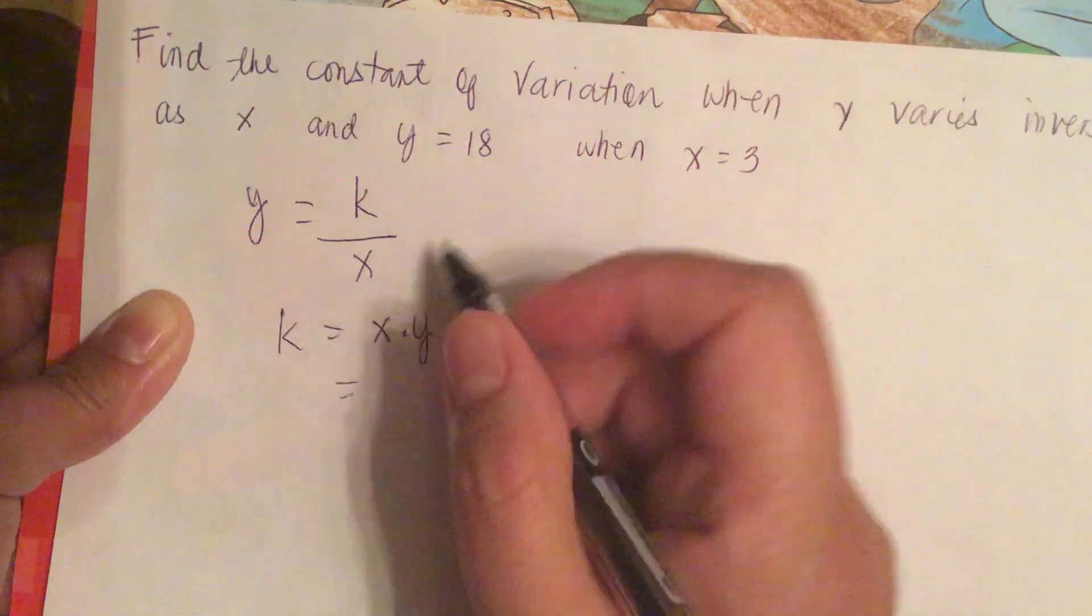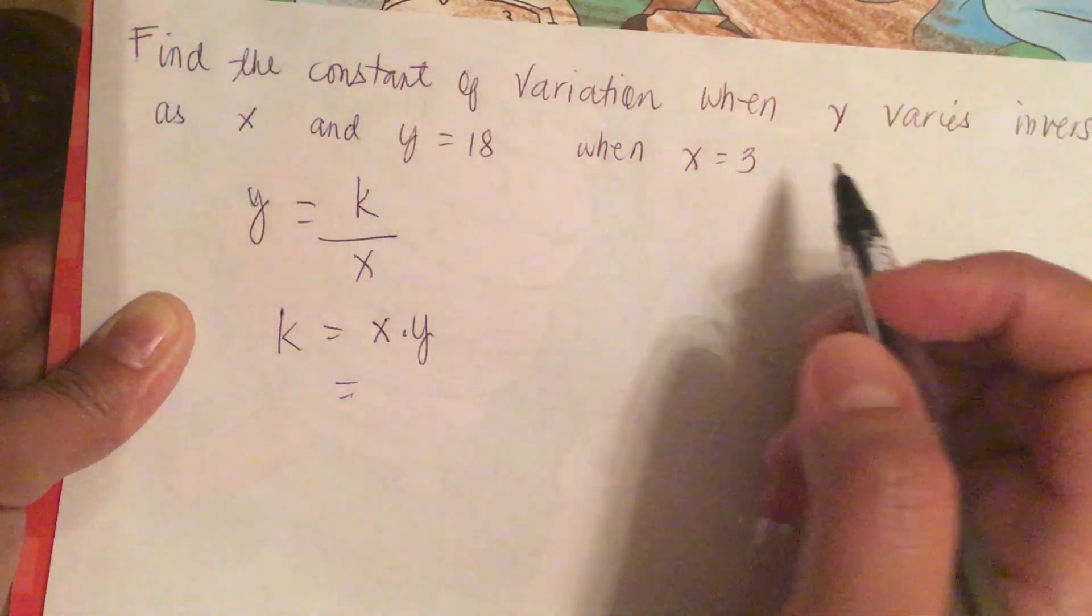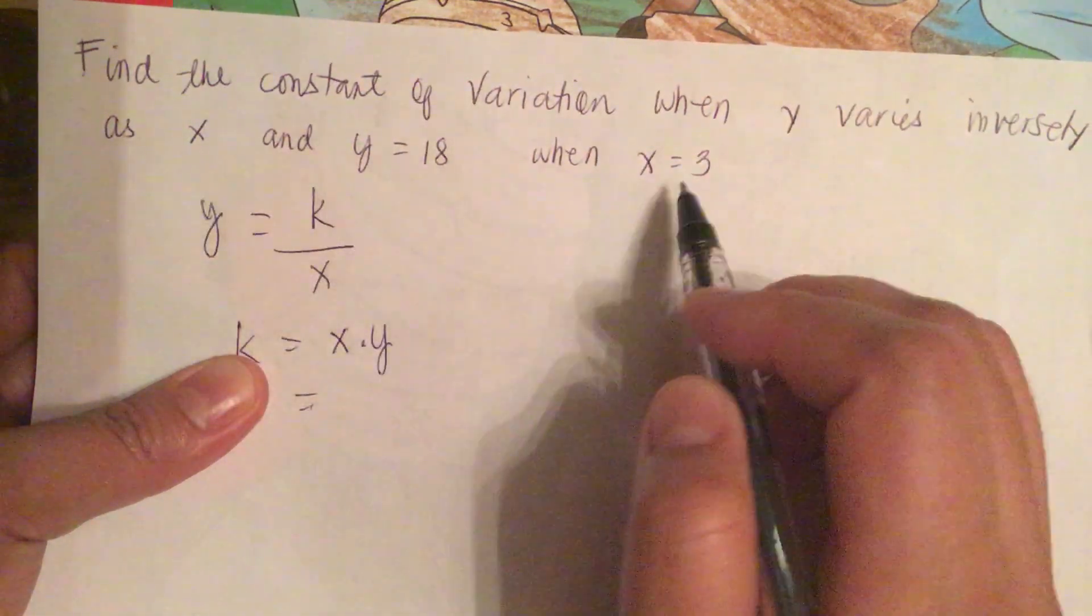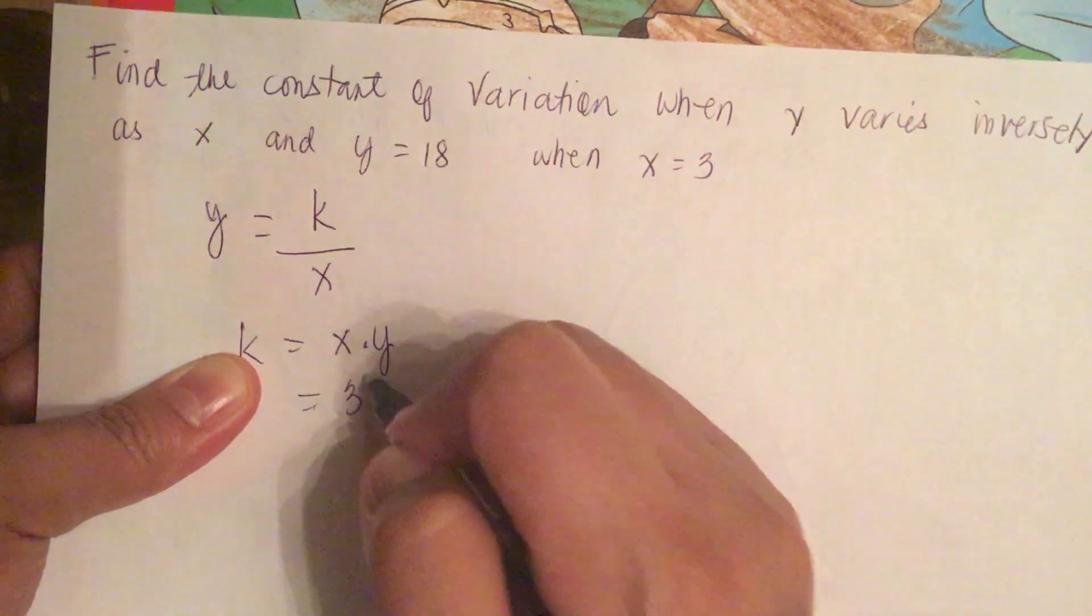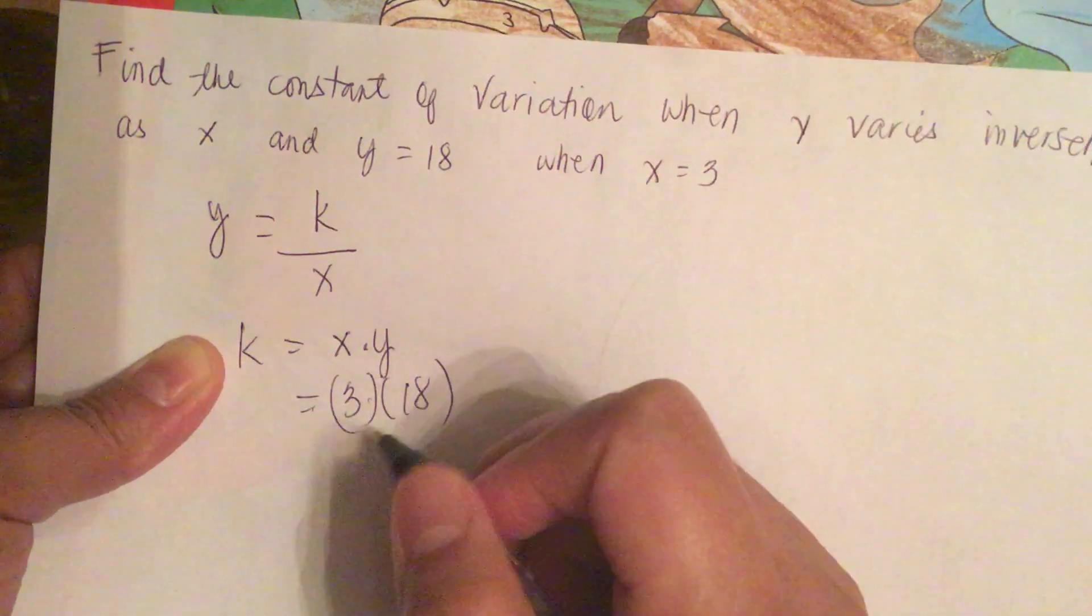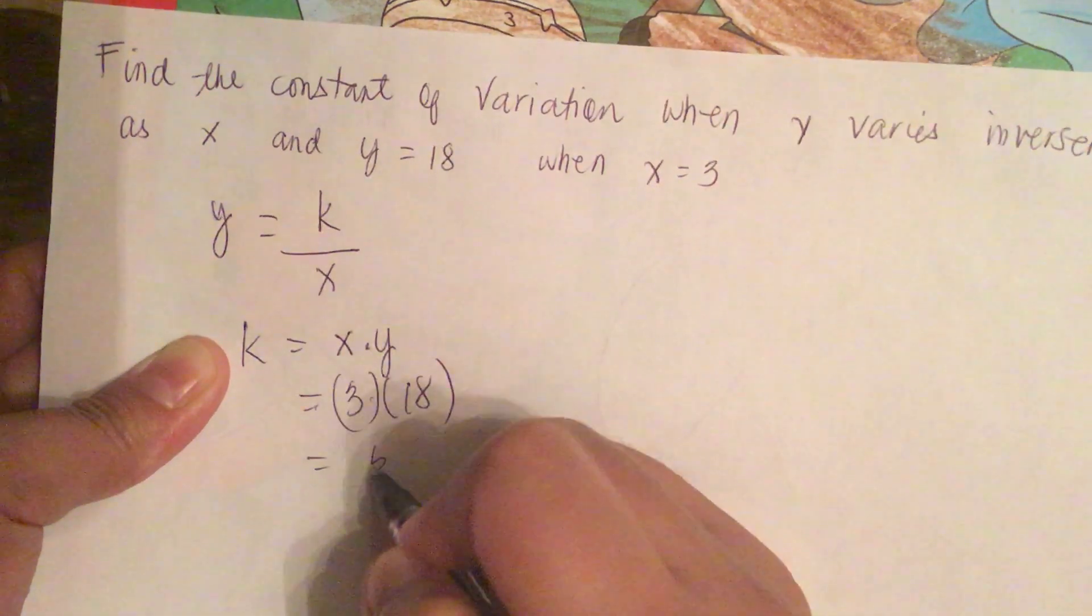So they give us x. So x is equal to 3 and y is equal to 18. So 3 times 18 is equal to 54.